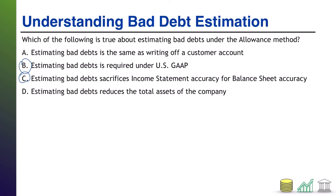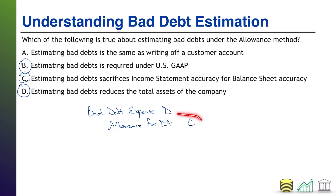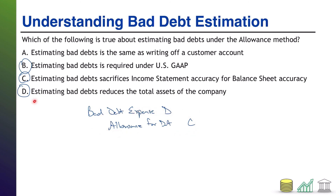How about D: estimating bad debts reduces the total assets of the company. That is also true. When you estimate your bad debts, you typically record the journal entry: bad debt expense as your debit, and allowance for doubtful accounts as your credit. That allowance for doubtful accounts is a contra asset, and contra assets reduce your total assets. Therefore, estimating bad debts does reduce the total assets of the company. So in this case, there were three of them that were true.